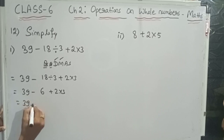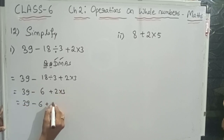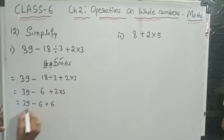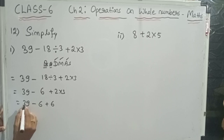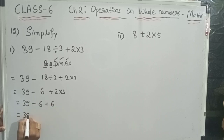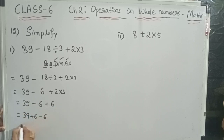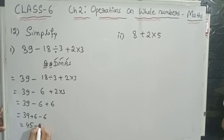Next I go with the multiplication: 2 into 3 is 6. Now for addition: 39 plus 6 is 45. Finally, subtraction: 45 minus 6 is 39. So 39 is the answer.